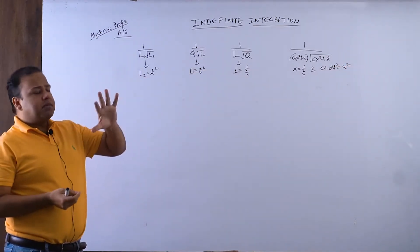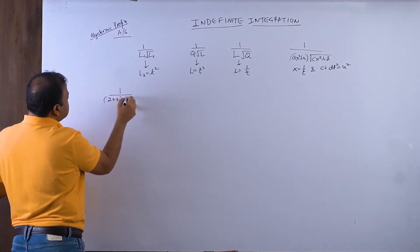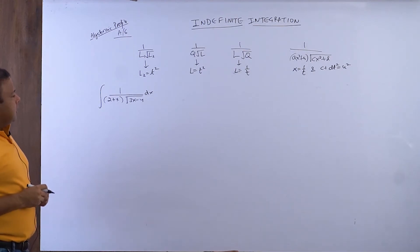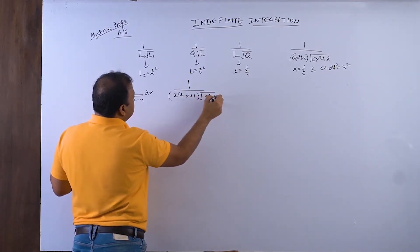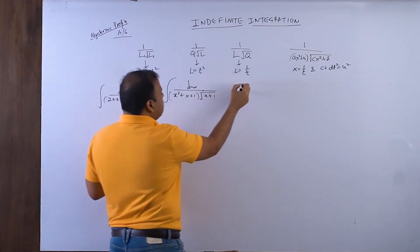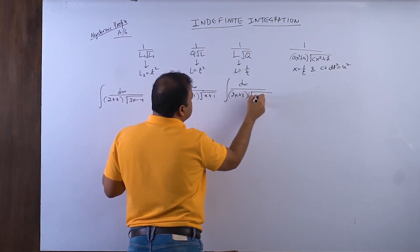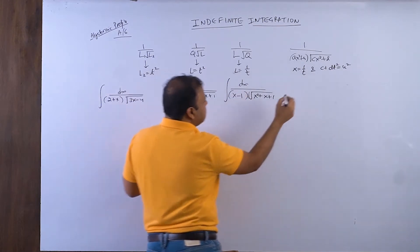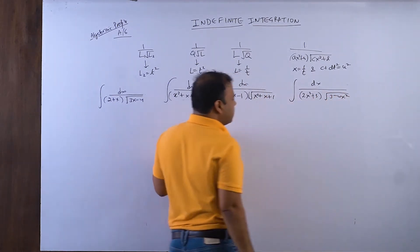These are standard substitutions — if we do examples, clarity will come. Suppose the first example is 1 over (2+x)·√(3x−4). This you need to integrate. Second question: 1 over (x²+x+1)·√(x+1) — this is Q·√L type. There is also 1 over (2x+3)·√(x²+x+1), which is L·√Q type. And 1 over (2x²+3)·√(3−4x²), which is the fourth profile type.